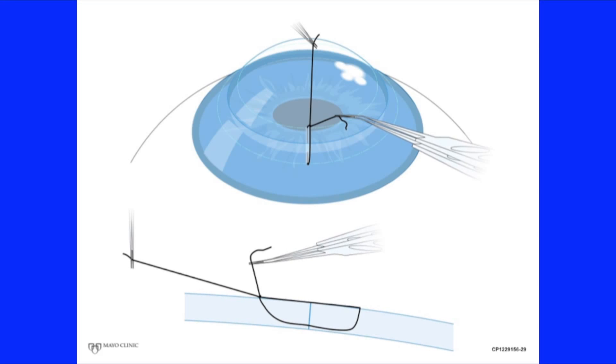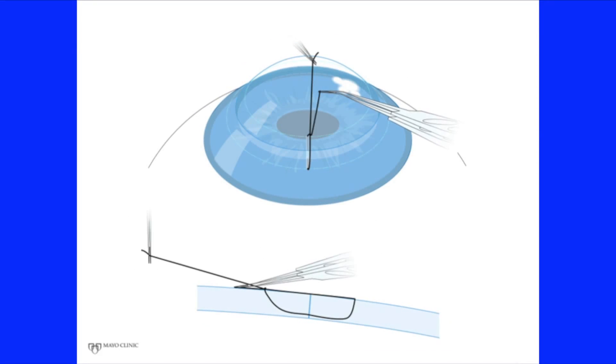Then pull hard on both the long and the short suture to lock the first throw into place so it cannot tighten or loosen. Then lay the short suture on the corneal surface.